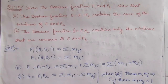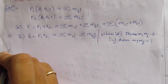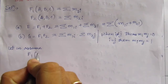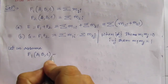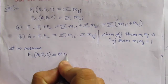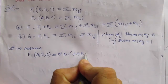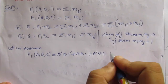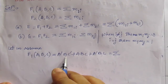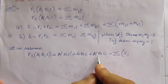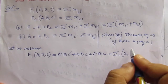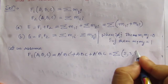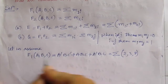We will prove this problem by considering some examples. Let us assume f1 of a, b, c equals ā·b·c̄ plus a·b·c plus ā·b·c. This is nothing but the sum of minterms: ā·b·c̄ corresponds to minterm 2, ā·b·c corresponds to minterm 3, and a·b·c corresponds to minterm 7, which is 4 plus 2 plus 1. So f1 equals summation of minterms (2, 3, 7).